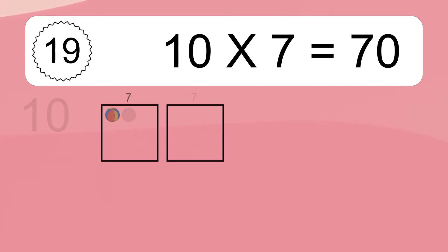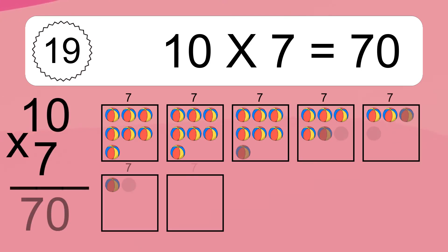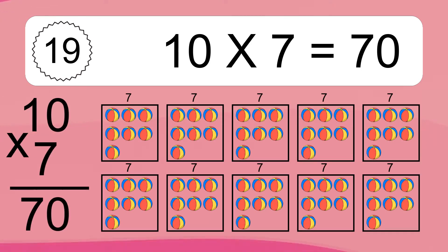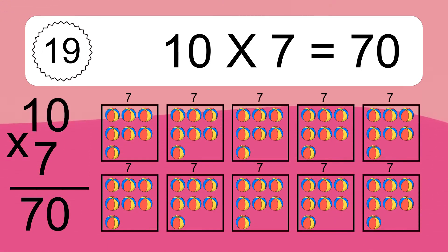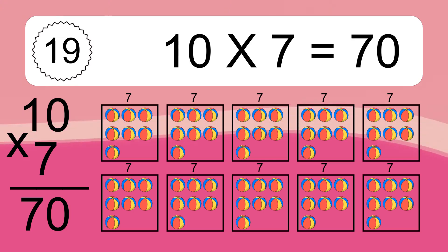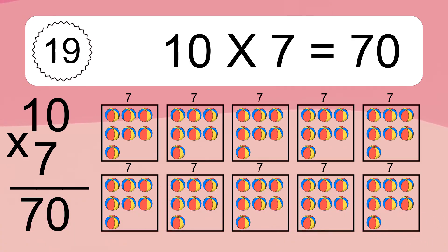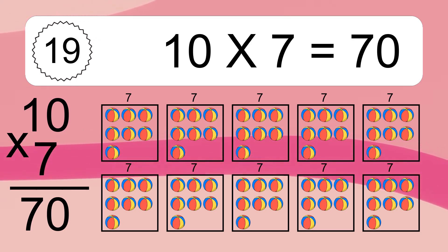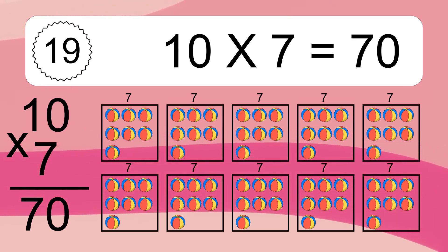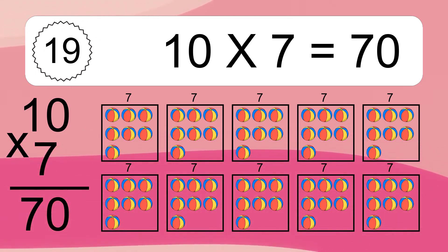Ten times seven equals what? Ten times seven equals 70. We have ten boxes, and each box has seven colorful balls inside. If you count all the balls in all the boxes together, you will have ten times seven balls. This equals 70 balls.